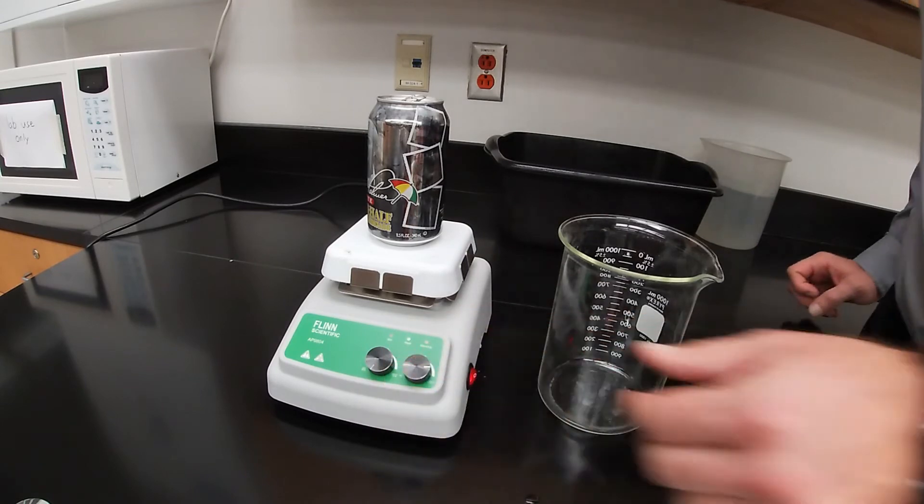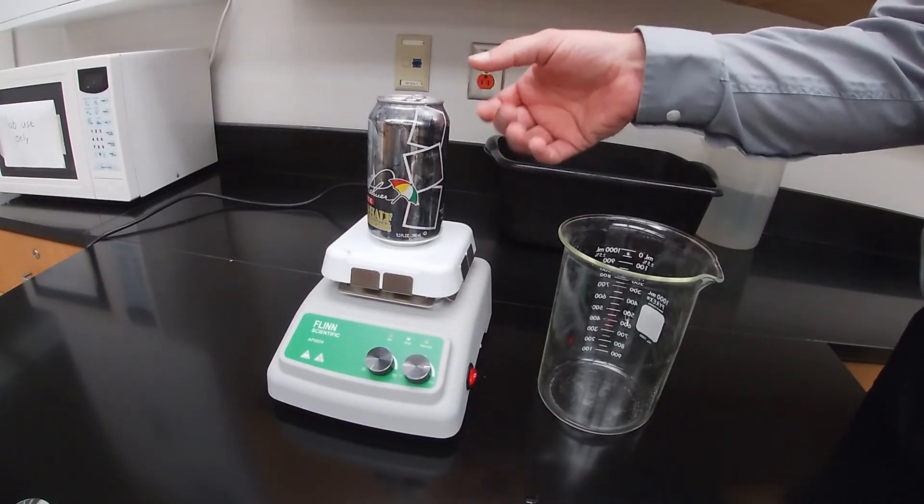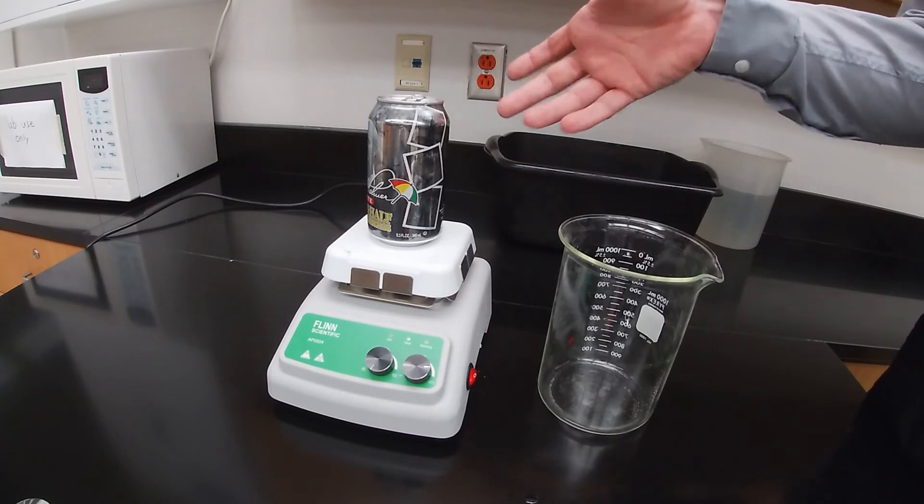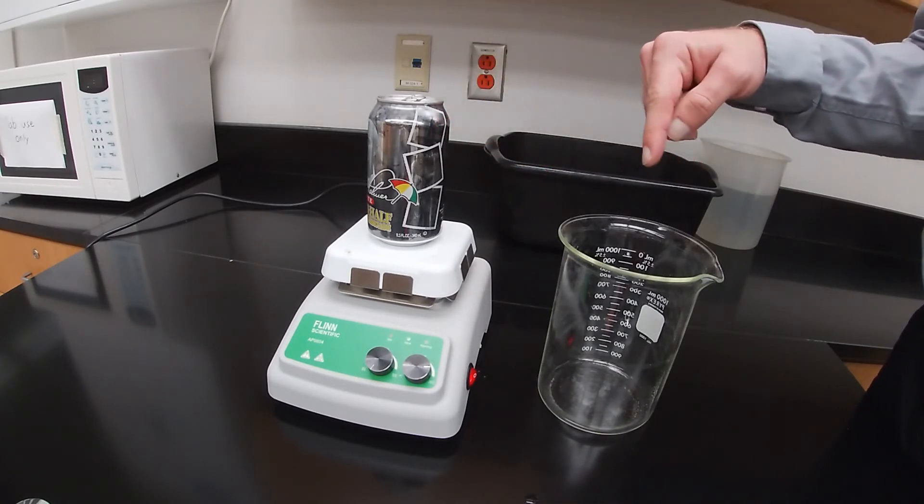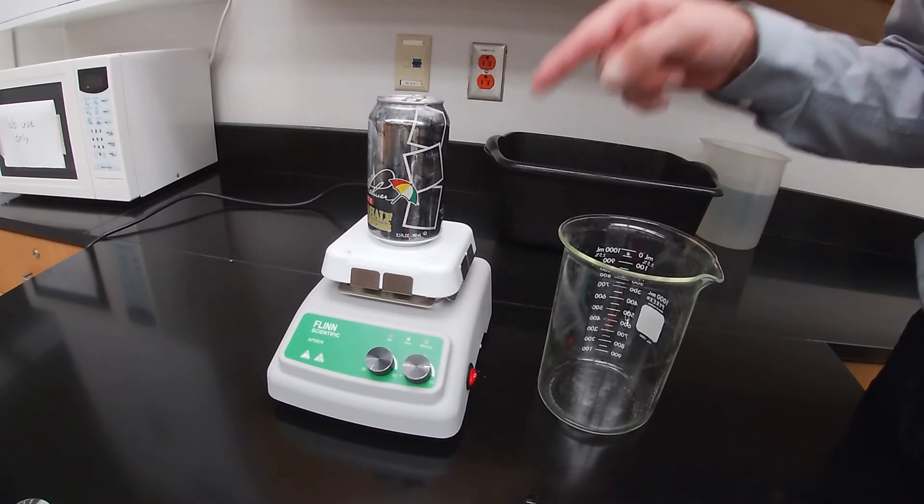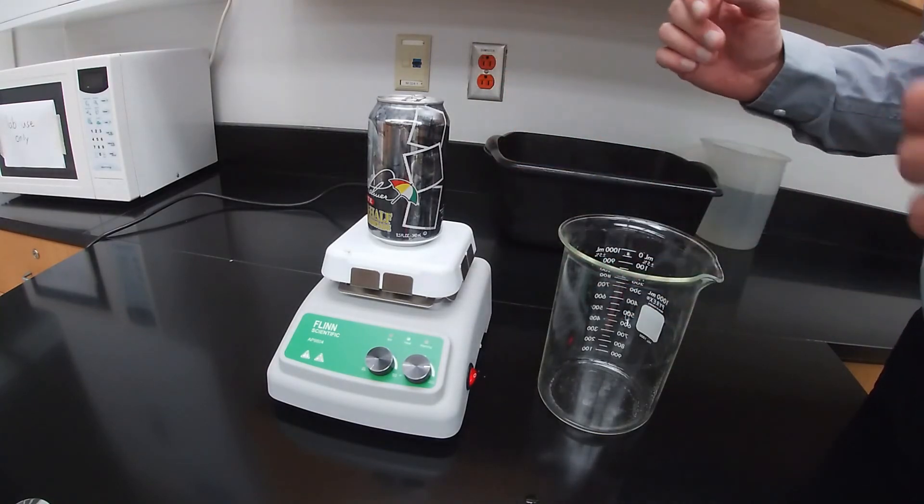And so if I have a little bit of water to evaporate in the can, that's going to be a gas that's going to expand in the can. And then when I rapidly cool the can by putting it in the ice bath, it's going to contract. And when it contracts, that's going to lower the pressure, and when the pressure is lower, the higher pressure from the atmosphere will crush the can.